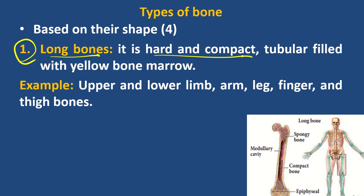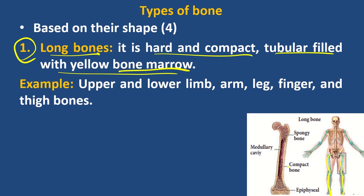It is compact. The interior field is yellow bone marrow. It is hard and compact. For example, the upper and lower limbs.